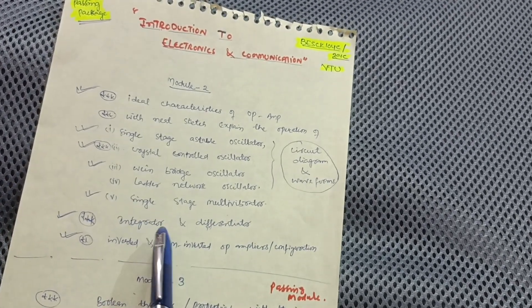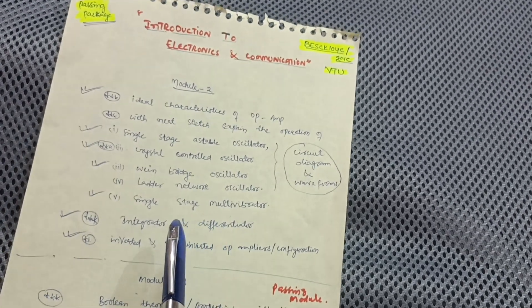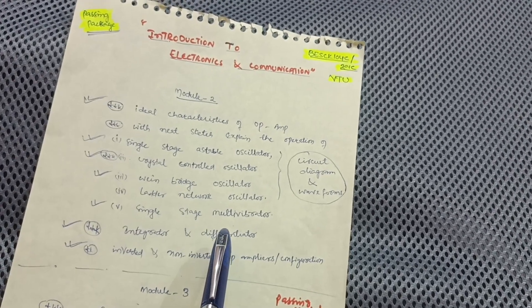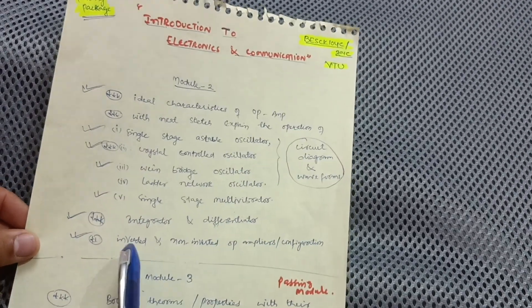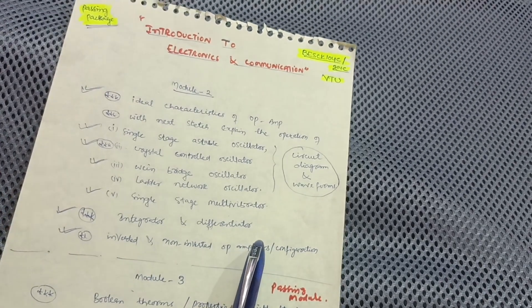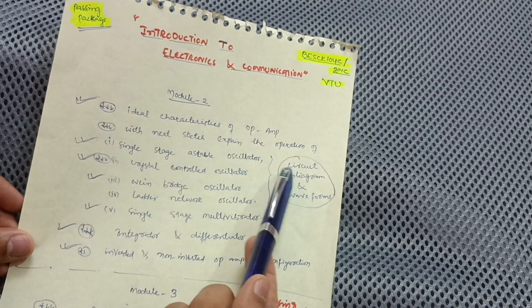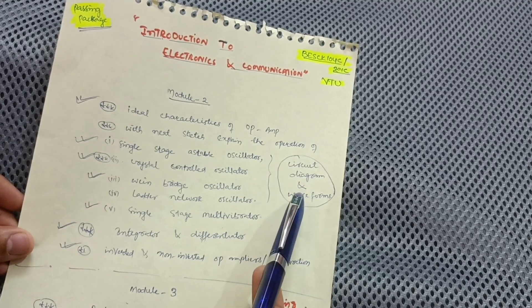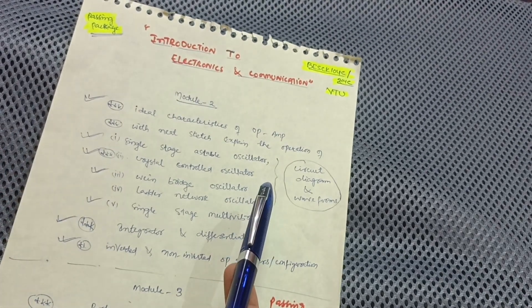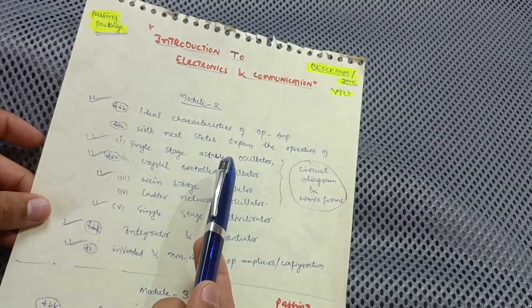You should know the difference between integrator and differentiator, and have definitions and concepts for both — this is the most important part for this module. Also cover inverted and non-inverted op-amp configurations. Focus on circuit diagrams and waveforms; draw neat sketches for these oscillators. You can easily get 10 to 15 marks by covering this portion.